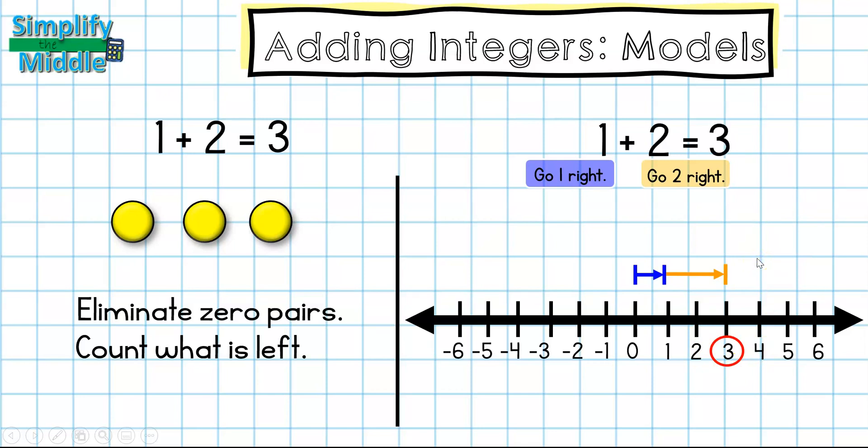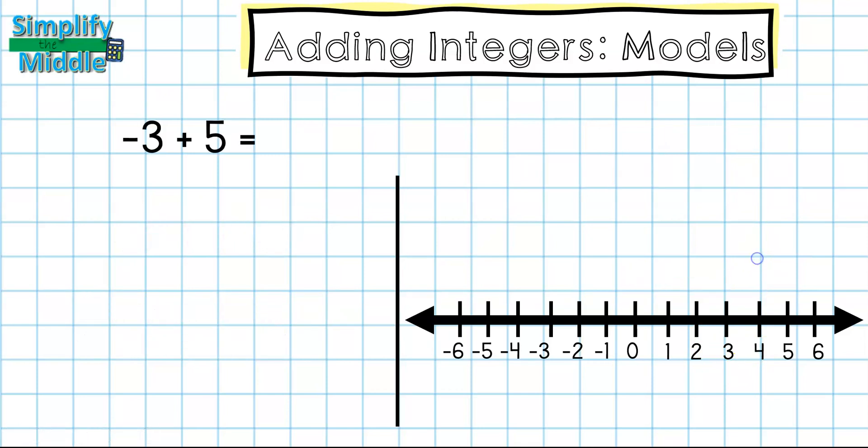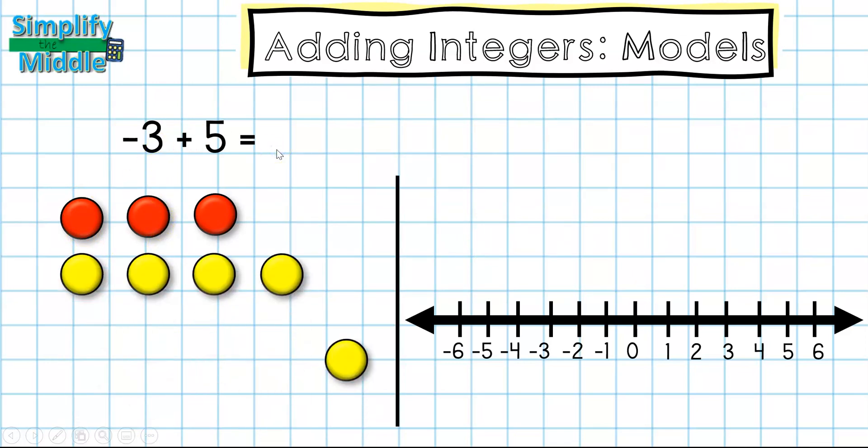Now let's try this with some integers. In this problem I have negative three plus five. I'll start with three negative chips which are red and I'm going to add five yellow chips. I'm going to do this in a very organized way where I'm going to stack any yellows underneath the red. I'm doing this because it makes eliminating my zero pairs much easier.